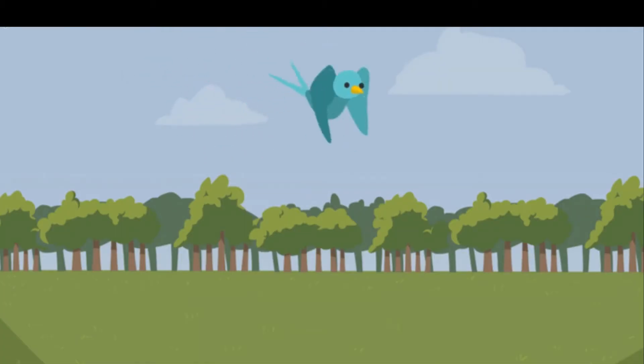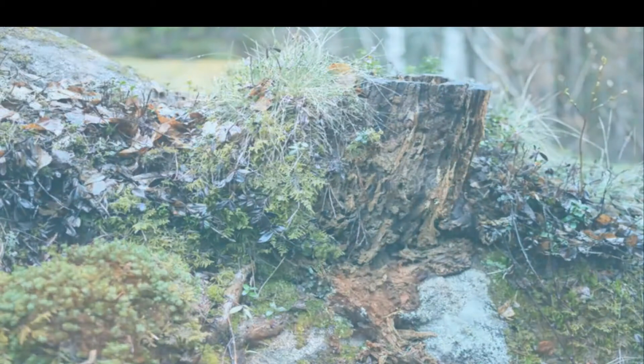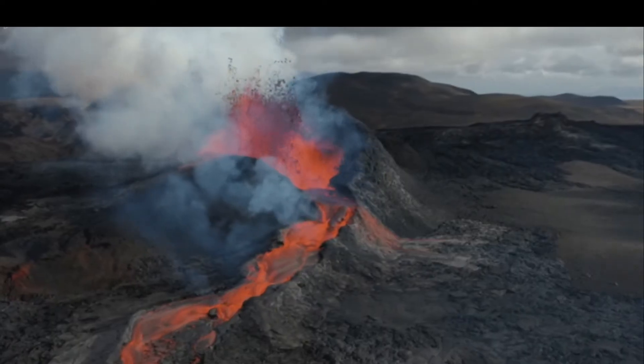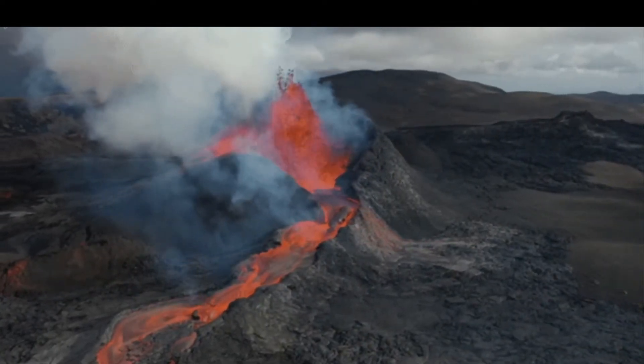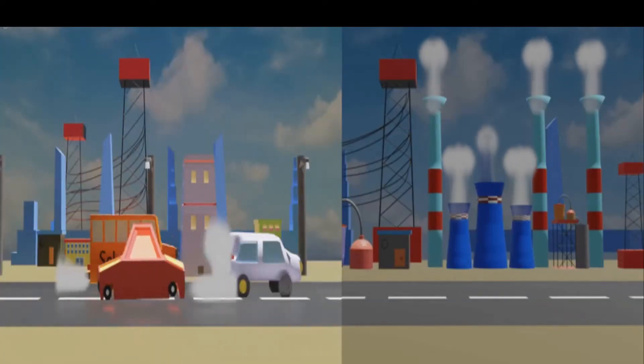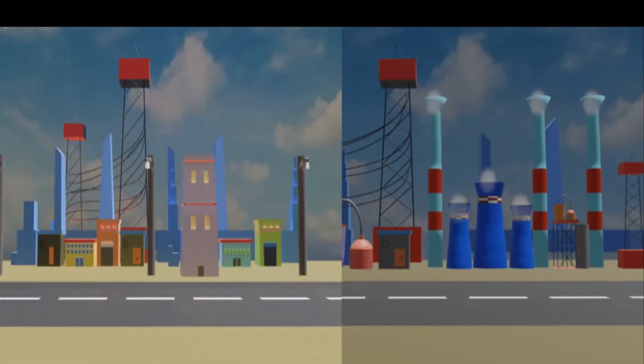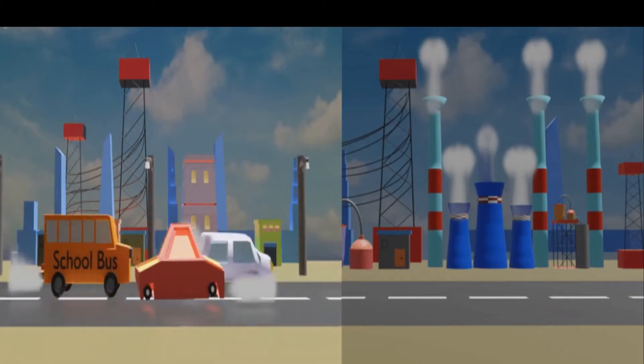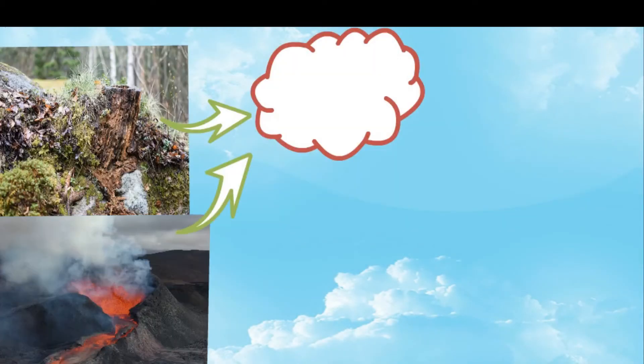The environment we live in is not as clean as it should be. Various natural phenomena like rotting of vegetation and volcanic eruptions release poisonous gases in the environment. On the other hand, some human activities like burning of fuels in vehicles and industries are releasing poisonous pollutant compounds in the environment.